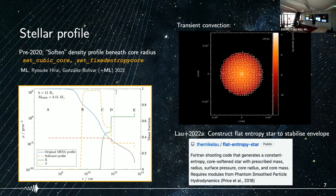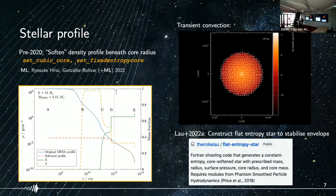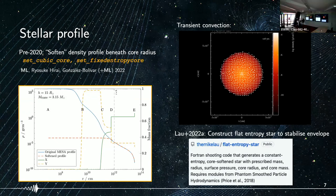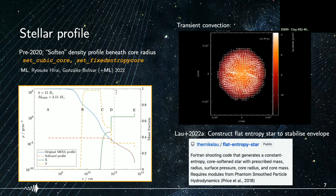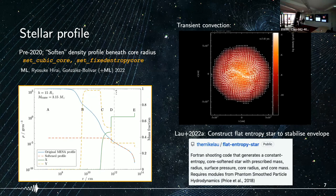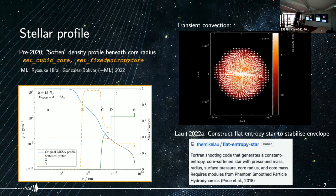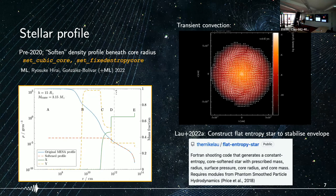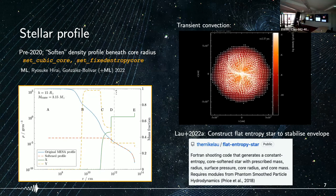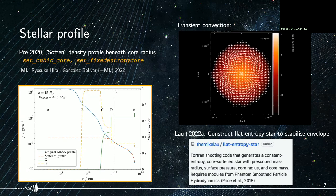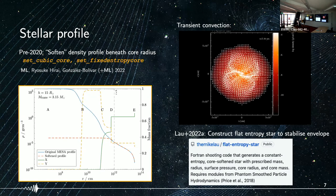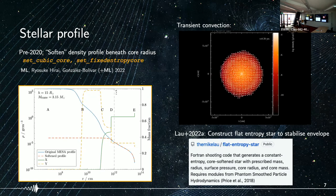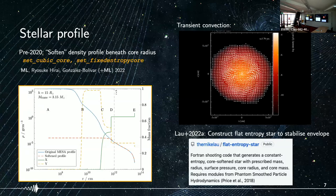When a giant star is mapped into PHANTOM, it tends to drive convection. We see a transient convection that dies out after a few turnovers since it is not driven by a central source. However, since this affects our ability to generate clean initial conditions, we have opted to generate a flat entropy star to suppress this convection.